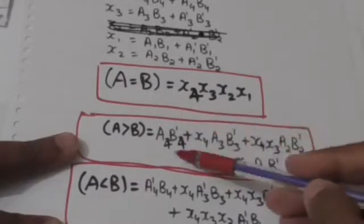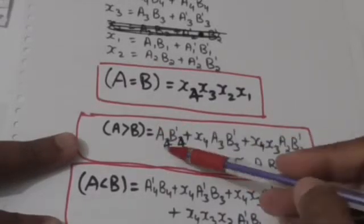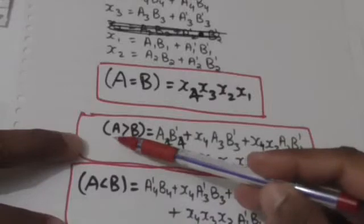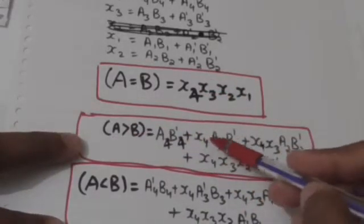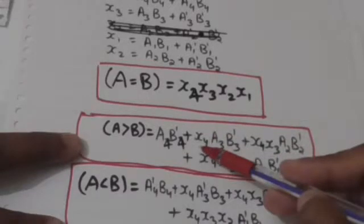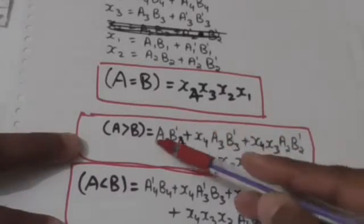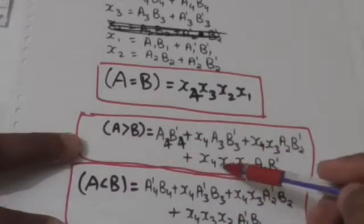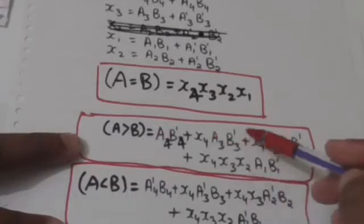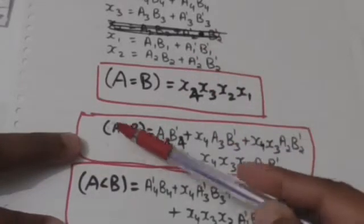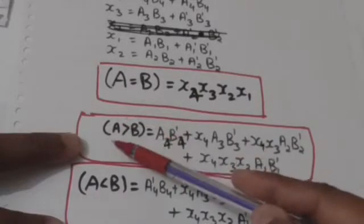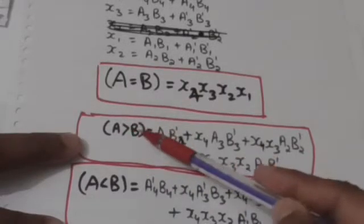When B4 is 0 and A4 is 1, A is greater than B. When X4 is 1 (meaning A4 equals B4) and A3 is 1 and B3 is 0, then the value of A greater than B will again be 1, confirming A is greater than B.